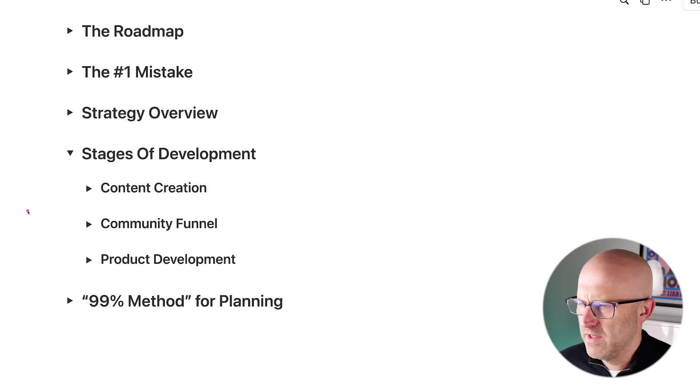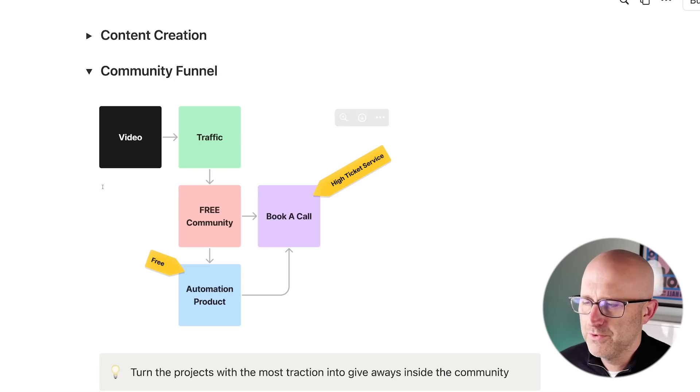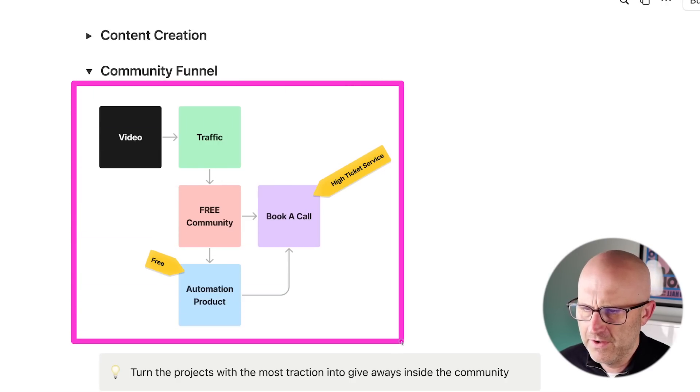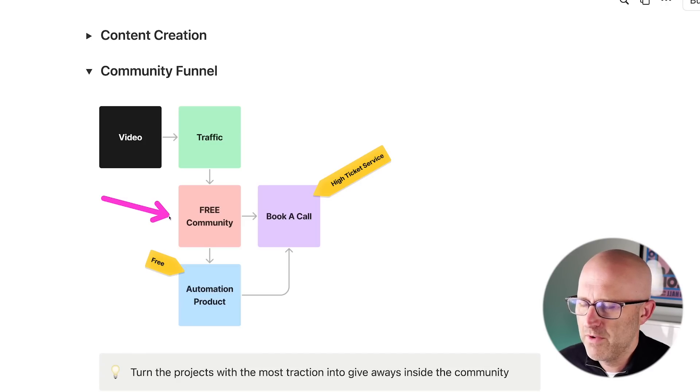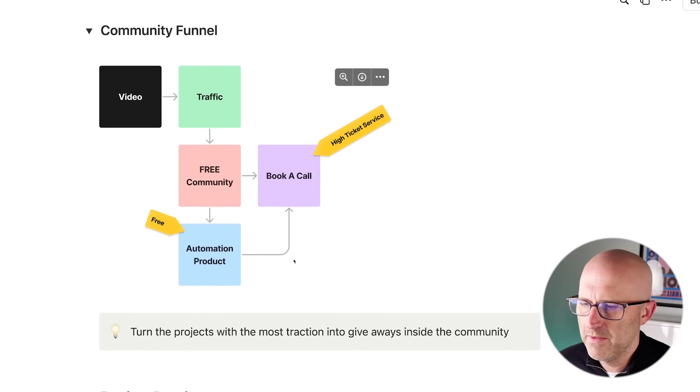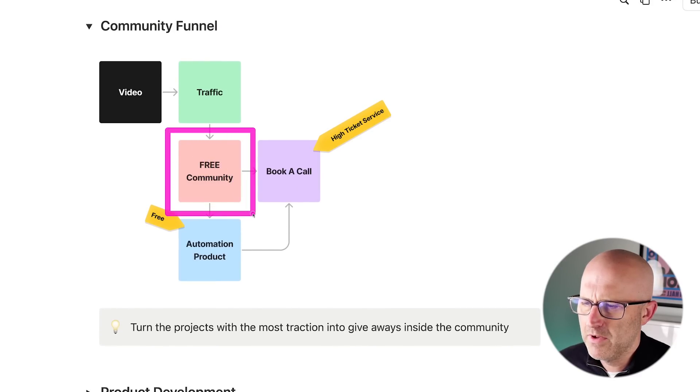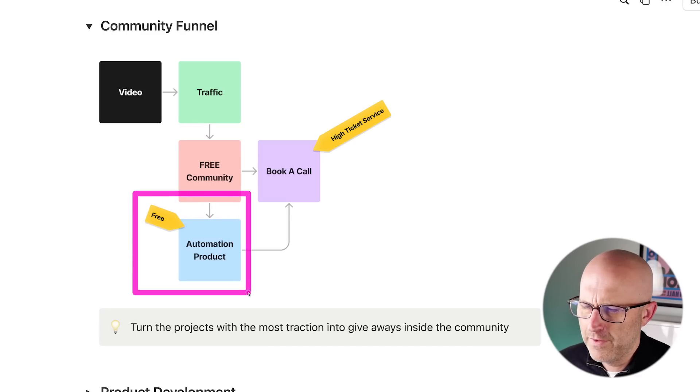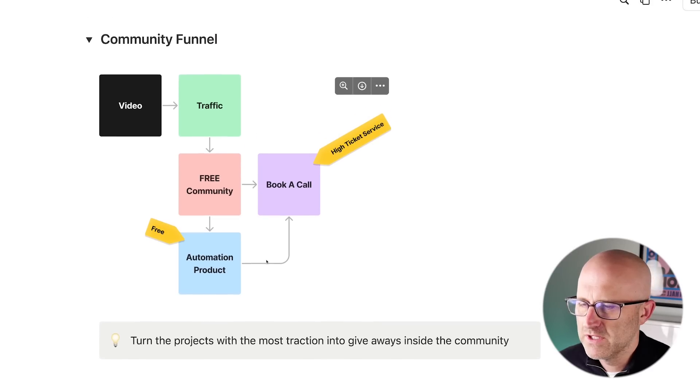So now when it comes to building out the funnel, I use a community funnel. I use a simple strategy like I just showed you where I have video that helps me generate traffic that goes to a free community. And within that community, people can see my content, they can get access to free automation projects, and they can also book a call to buy high ticket services. Now I do have a paid community as well, but you really don't need that to start. You just simply need this very basic funnel strategy. And you don't need an email list as part of your community either, because inside your community, when you make a post on a platform like school, you can simply have that post emailed to all the members. And I find that this is the best strategy because people are getting something of real value. They're joining a group where you're leading that group, and there's also other community members and all sorts of free resources inside the community.